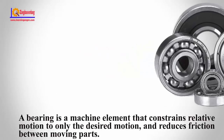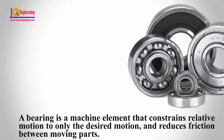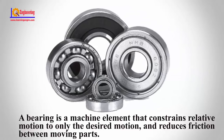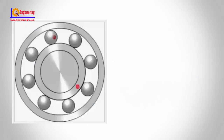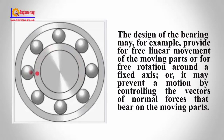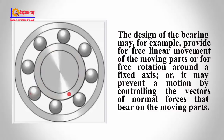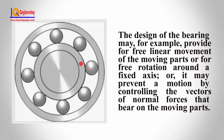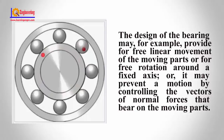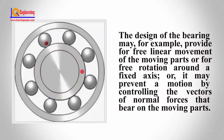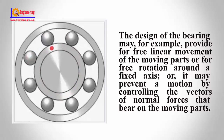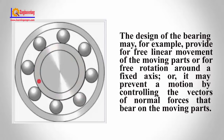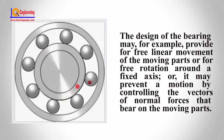A bearing is a machine element that constrains relative motion to only the desired motion and reduces friction between moving parts. The design of the bearing may, for example, provide for free linear movement of the moving parts, or for free rotation around a fixed axis, or it may prevent a motion by controlling the vectors of normal forces that bear on the moving parts.